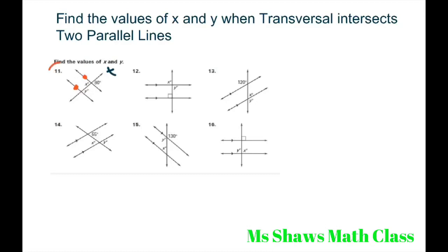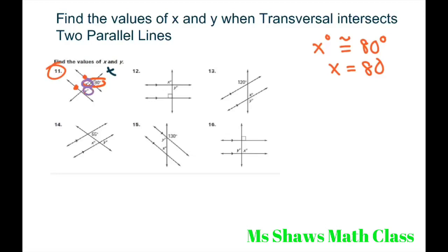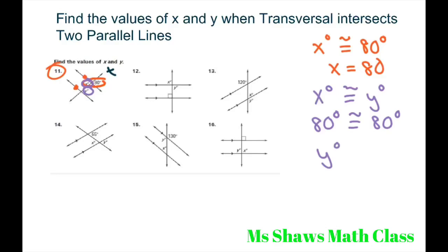For number 11, we know the intersecting line theorem — those two are congruent. So angle X is congruent with 80 degrees, therefore X equals 80. And also through our alternate interior angle theorem, X degrees is congruent with Y degrees. So 80 degrees equals 80 degrees — Y equals 80.